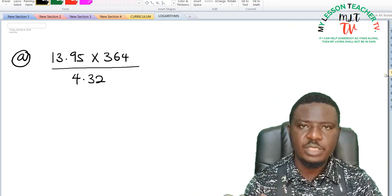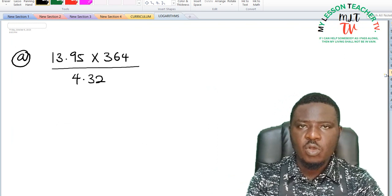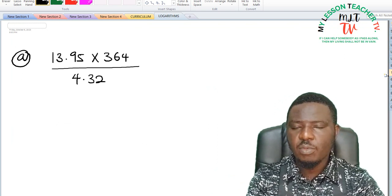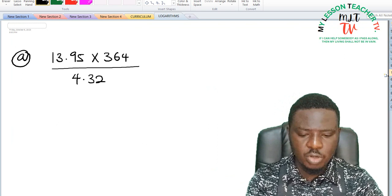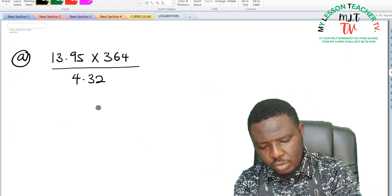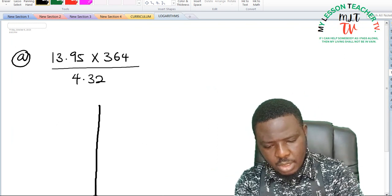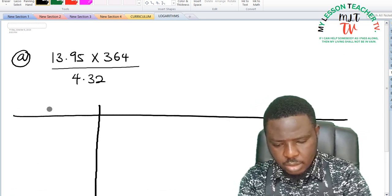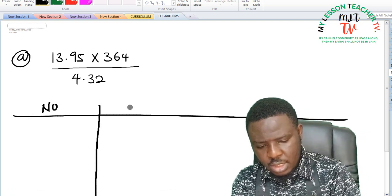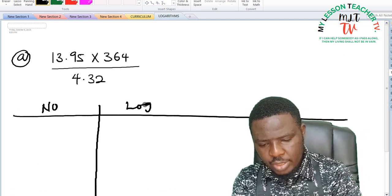For part a, what we have to do is first and foremost convert each of these from indices to logarithm. So we are going to have a column, this is going to be numbers and logarithm.